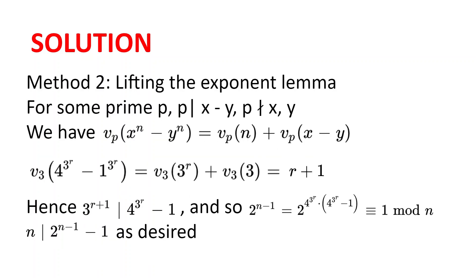Now on to our second method, using the lifting the exponent lemma, which says that for some prime p, where p divides x minus y but p doesn't divide x or y, we have that v_p of x to the power of n minus y to the power of n is equal to v_p of n plus v_p of x minus y, where v_p of x is the largest power of p that goes into x.